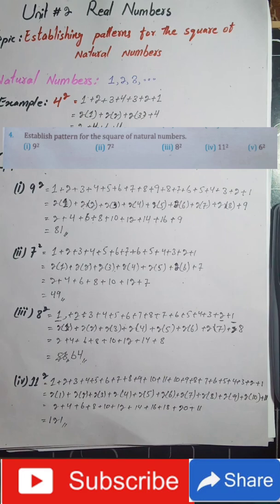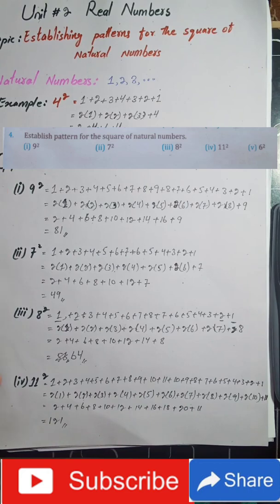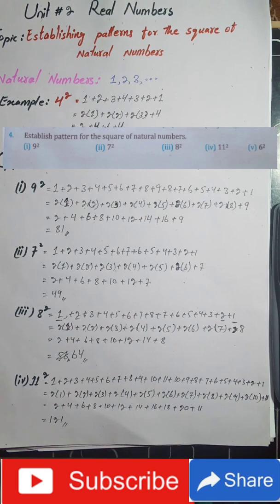So we established a pattern for the square of 9, square of 7, square of 8, and square of 11. You have to make the same pattern for the square of 6 on your own. With this, Exercise 2.1 is complete and all topics related to this exercise are also completed. I hope you had some benefit from this video. If you liked this video and our work, please subscribe to our channel and share it with your friends and family. Thank you.